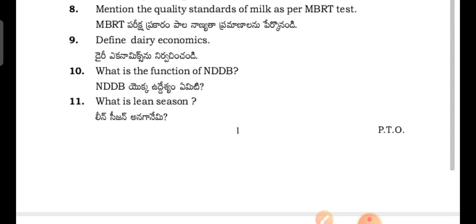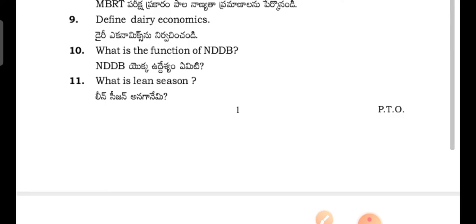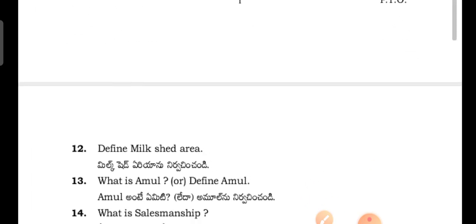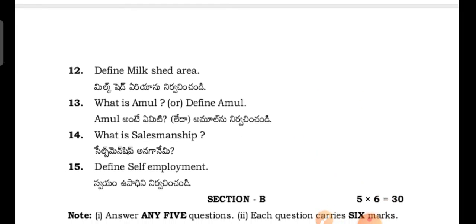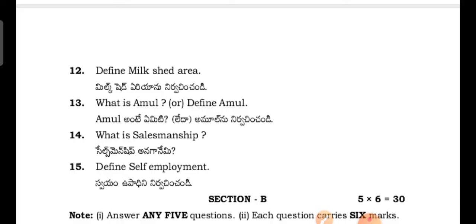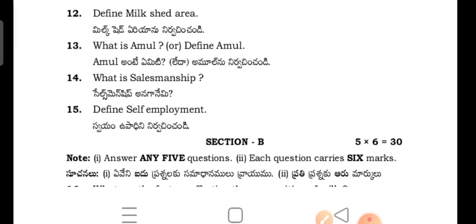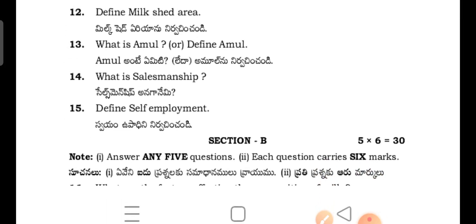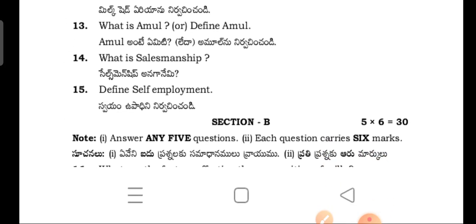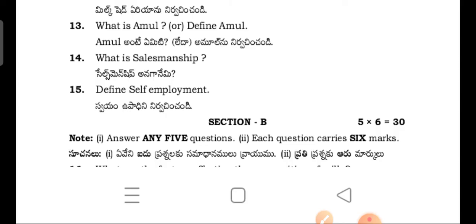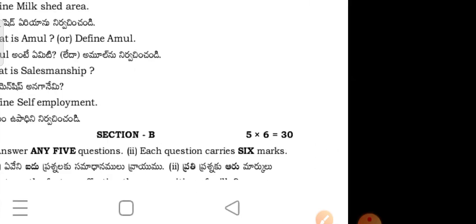What is clean season? Define milk shed area. Define Amul. What is salesmanship? Define self-employment. So that concludes the Section A questions for the third paper.